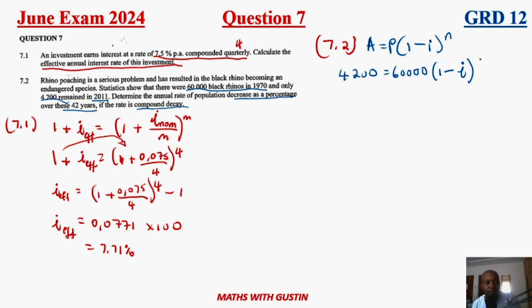We're going to divide by 6,000 on both sides here. Make our life easy. 6,000 would cancel out. Therefore, you are going to have 4,200 divided by 6,000, and then the power of 42.